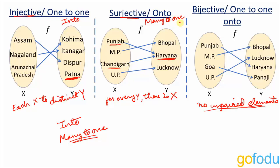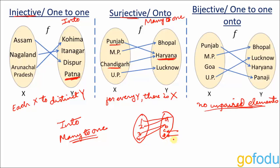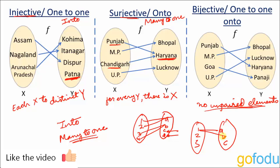Can there be a many-to-one into function? Yes — two elements from X map to the same element in Y, and some elements in Y are left unmapped, giving a many-to-one into function. Can there be a one-to-many function? No — as discussed at the beginning, for each x there should be a unique y. We cannot obtain two y values from a single x, so one-to-many cannot qualify as a function.